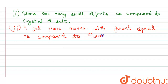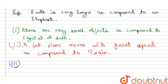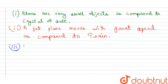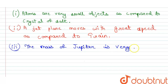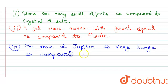Now let's move to the third statement. The third statement is: the mass of Jupiter is very large. So I am re-stating that statement as: the mass of Jupiter is very large as compared to the mass of Earth.